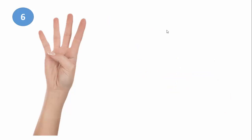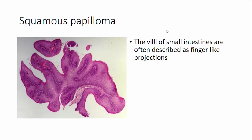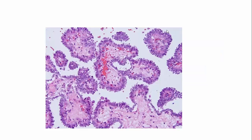The sixth one is fingers. The villi of the small intestine are often described as finger-like, as you may have studied in histology. In pathology, finger-like projections are used to describe papillary projections in squamous papillomas and papillary carcinomas. You can see these finger-like villi lined by tumor cells — this is a papillary carcinoma of the thyroid.